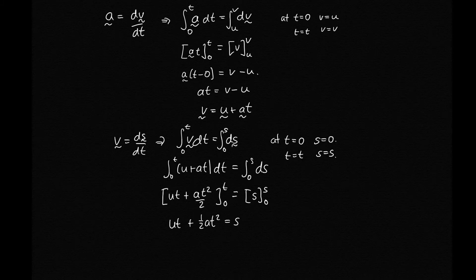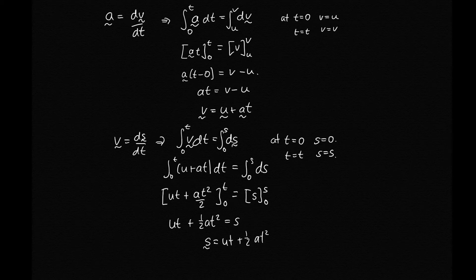So we get ut + ½at² = s. This is our second kinematic equation: s = ut + ½at². These can be vectors — we can use it in one dimension or in multiple dimensions, in which case s, u, and a are all vectors.